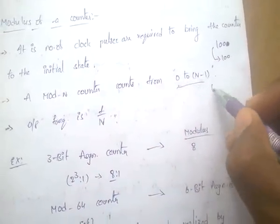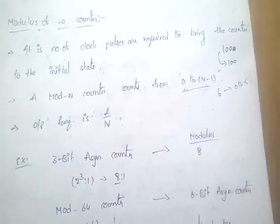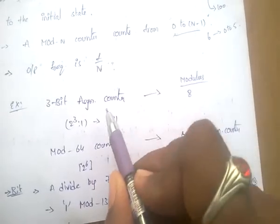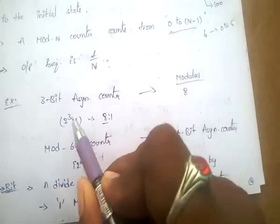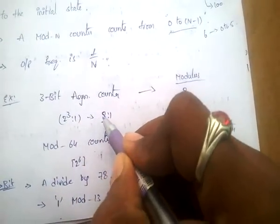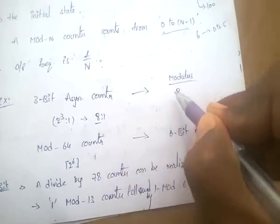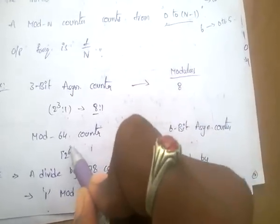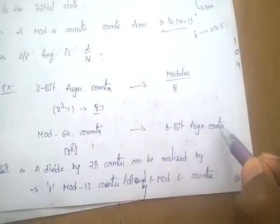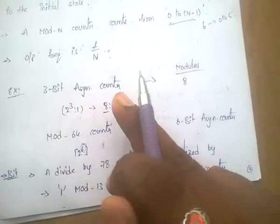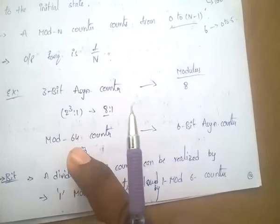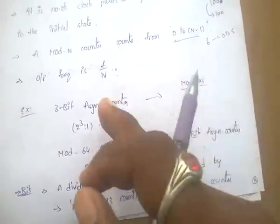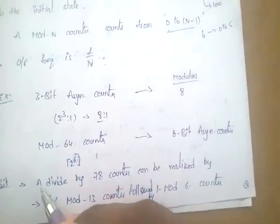To find the modulus: a 3-bit asynchronous counter has 2^3 = 8 states, so it is a mod-8 counter. A mod-64 counter means 64 = 2^6, so it is a 6-bit asynchronous counter. Likewise, a 3-bit synchronous counter is a modulus-8 counter, and a modulus-64 counter is a 6-bit synchronous counter.